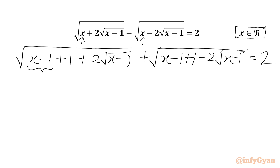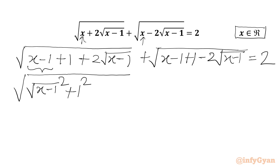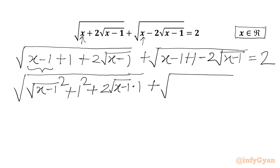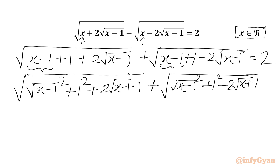Now x minus 1 we can write as (√(x−1))². Then we have 1 written as 1². Then we have 2 times √(x−1) times 1. Plus square root of again (√(x−1))², which is x minus 1, plus 1², minus 2 times √(x−1) times 1, equal to 2.